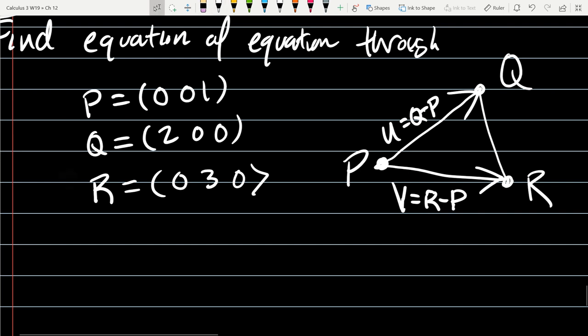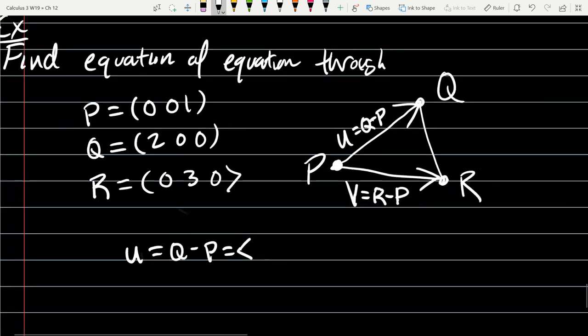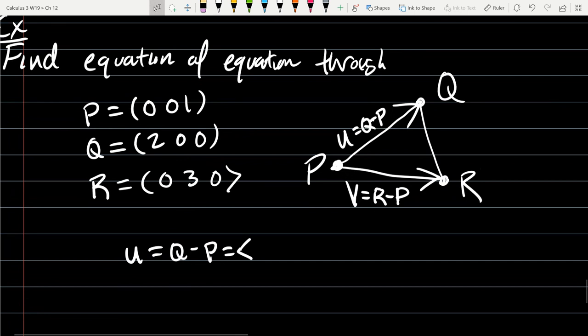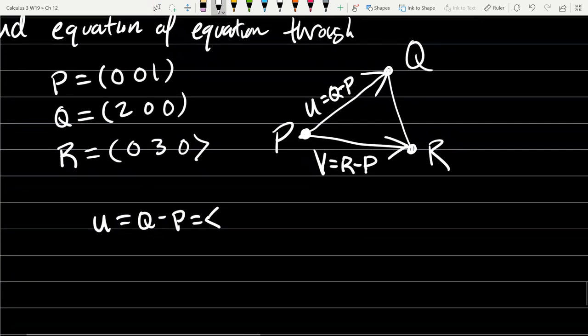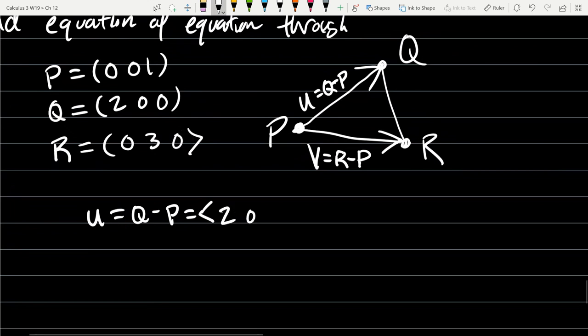So let's compute. And our normal will be, of course, a cross product of these two. So U equals Q minus P, which is Q minus P, 2, 0, negative 1. V is R minus P, which is R minus P, 0, 3, negative 1.